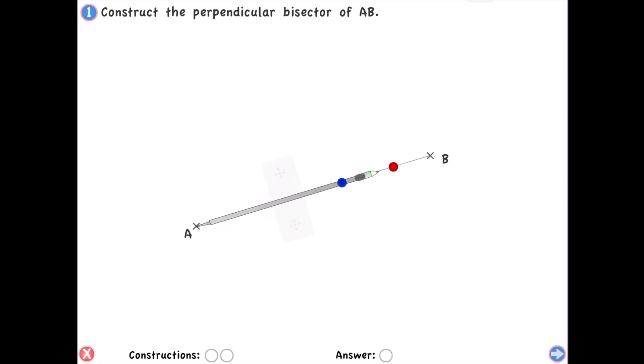Now that doesn't mean that you start measuring what the length of the line is. You can just take an approximate length. Here this length is definitely more than half the length of AB.